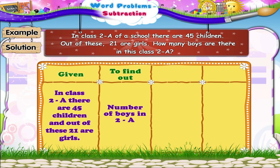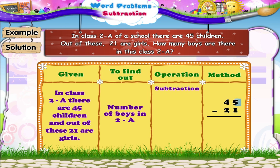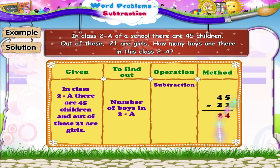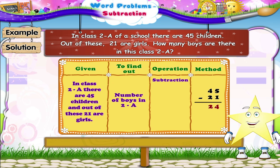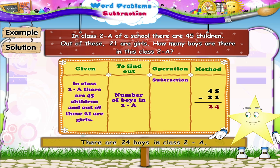Will you solve this one, Stari? We have to subtract 21 from 45. 5 units minus 1 unit is equal to 4 units. 4 tens minus 2 tens is equal to 2 tens. You are right, Stari — there are 24 boys in class 2A.